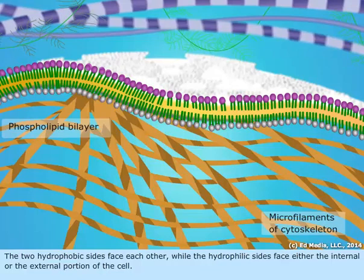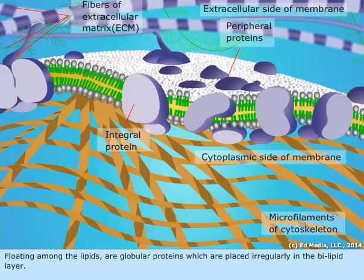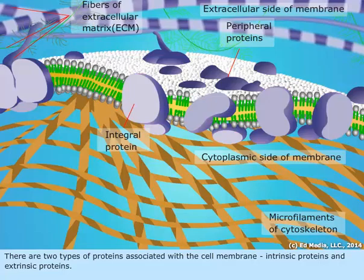Floating among the lipids are globular proteins which are placed irregularly in the bilipid layer. There are two types of proteins associated with the cell membrane: intrinsic proteins and extrinsic proteins.